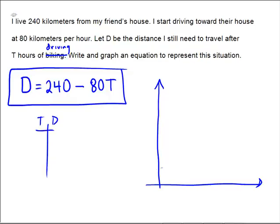And notice that if I've traveled for 0 hours, I'm still at home, I will have to go 240 more kilometers. And if I travel for 1 hour, let's see, 80 times 1 is 80, and 240 minus 80 is 160.